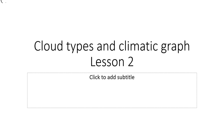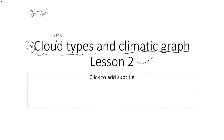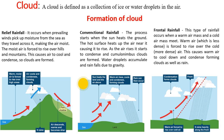Let's look at lesson two on weather, climate, and vegetation. In this part we're going to look at cloud types and possibly climatic graphs. Cloud types is quite confusing for students to differentiate, so we're going to look at the different types and how to differentiate them using diagrams to bring out their individual characteristics.